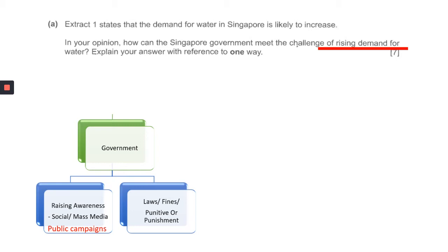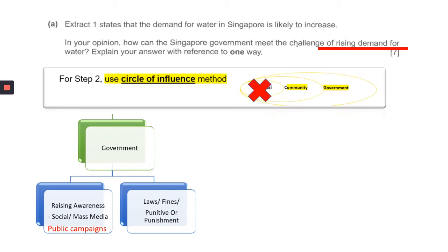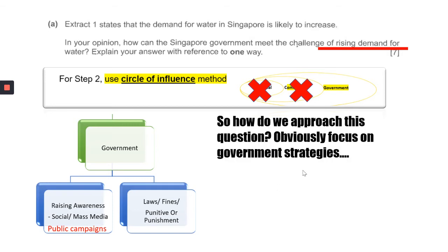So obviously we're looking at strategies. From this small diagram below on your left, you can see that as a government, you can do two things. You can either raise awareness, or you could use a punitive measure where you use your capacity as a government to either have laws or make sure that people don't do something that would worsen the situation. This is what we call the circle of influence — we are not looking at individual or community, we are looking at just government.